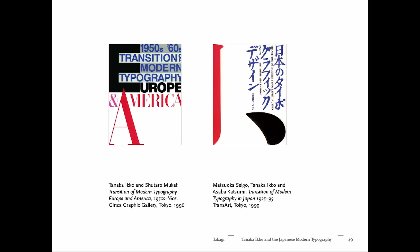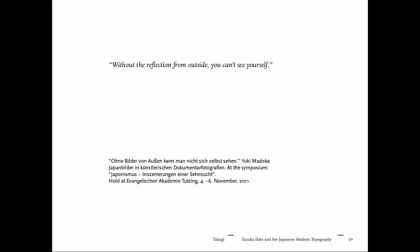Towards the nineties, Tanaka was also putting effort into not only doing design about Japanese tradition, but bringing two things together: his cultural identity and his interest in American and European typography, while also thinking about how to communicate this. He was involved in two publications which were quite important for my research in Japanese typography. There is a quotation that fits Tanaka's work very well: 'Without the reflection from outside, you can't see yourself.' I translated it from German — I think it tells us quite a lot.